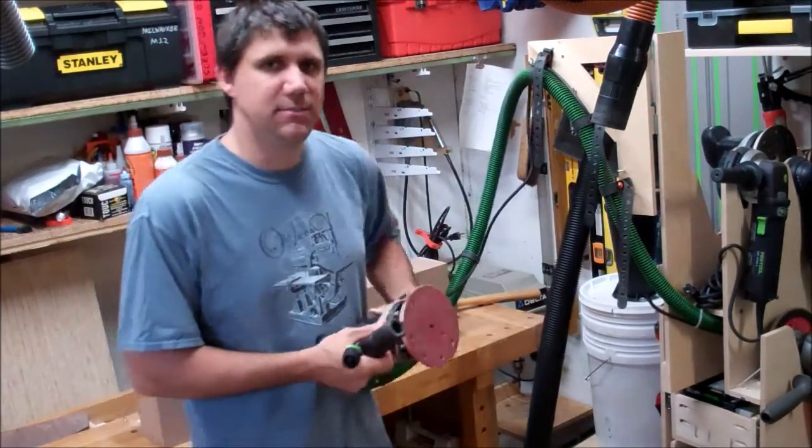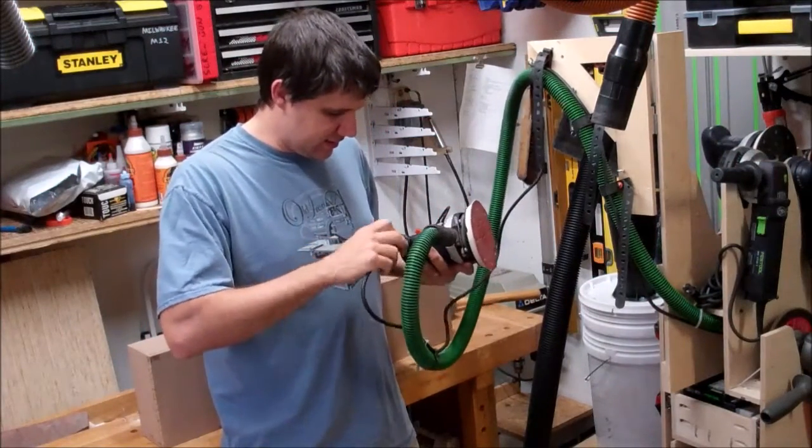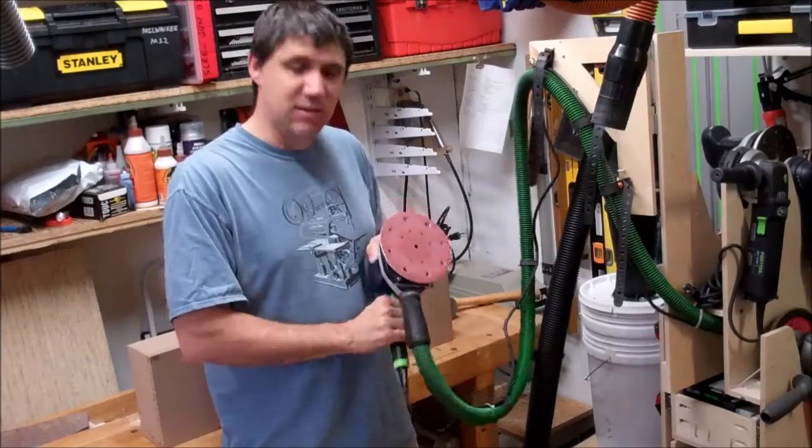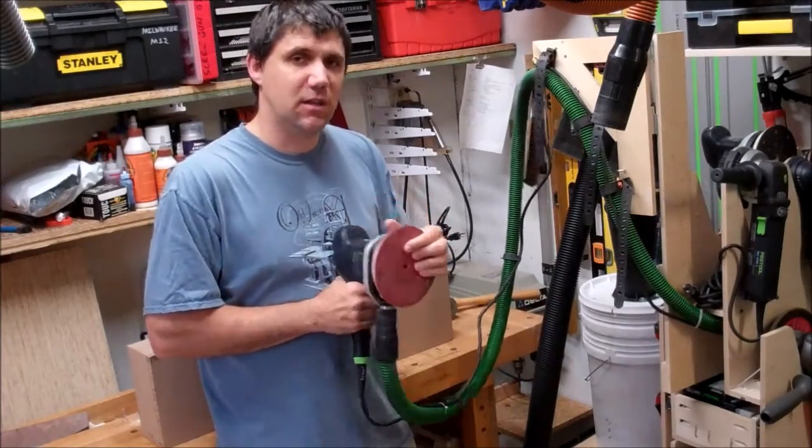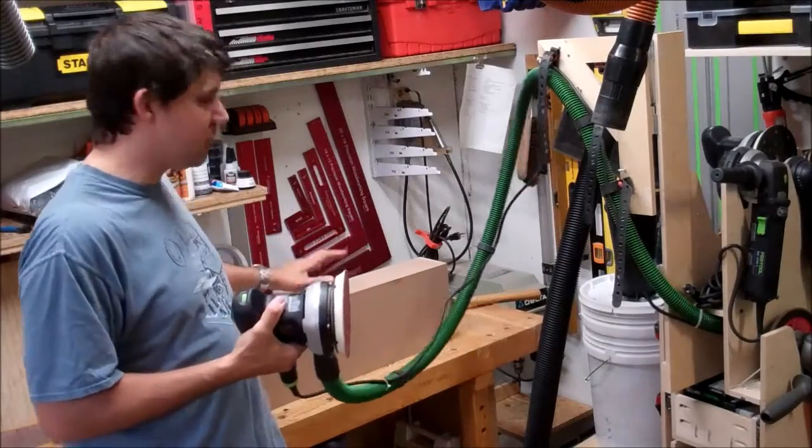But since I'm sanding this simple square box right now, I find myself only using the ETS-150, because it does a great job on flat surfaces. All I need to do is use one sander progressing through multiple grits.